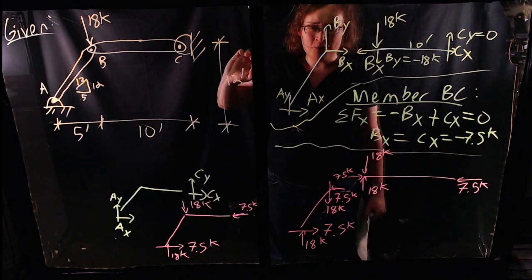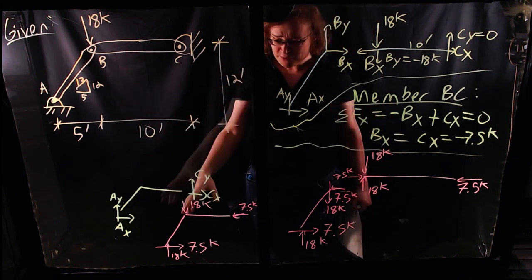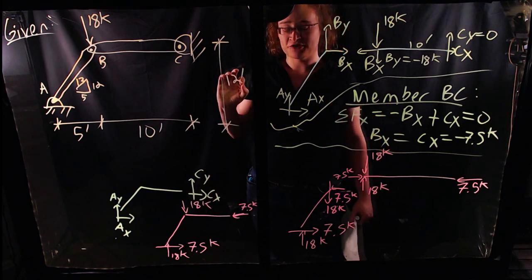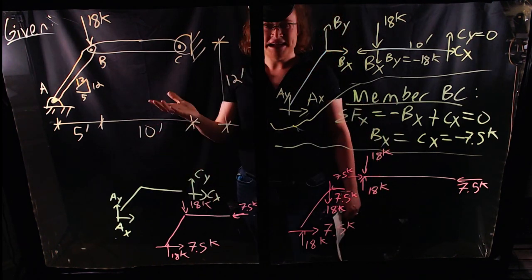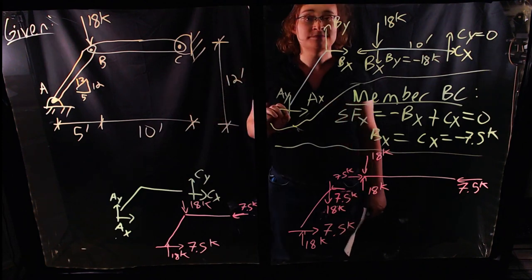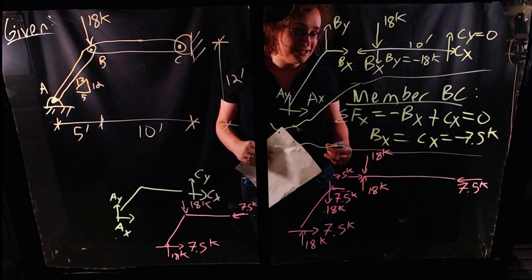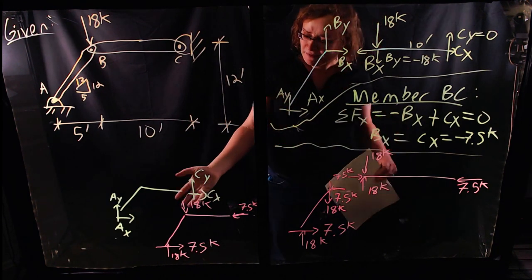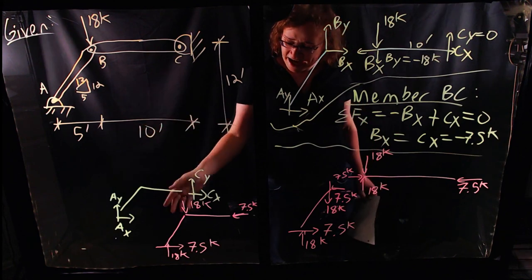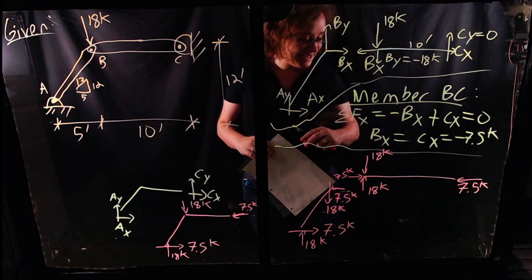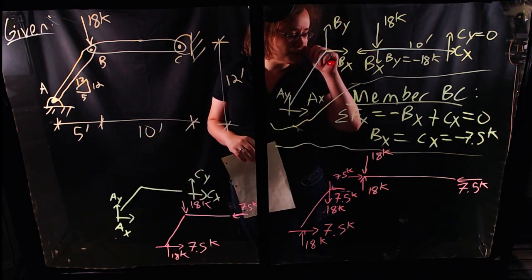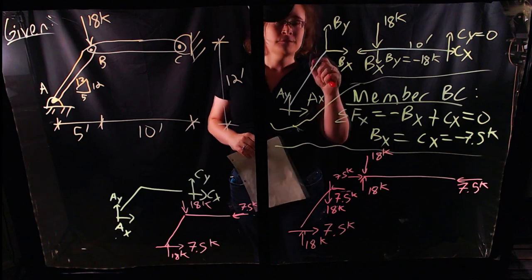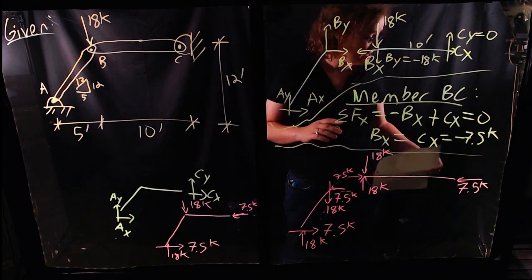You can always go back and relabel everything in their correct actual directions and see if equilibrium still holds true. If something is in equilibrium, the entire object must be in equilibrium, and each individual subpiece or component must also be in equilibrium.